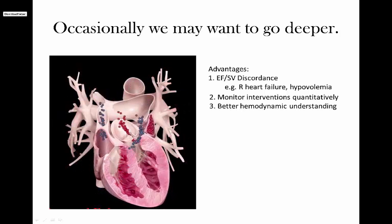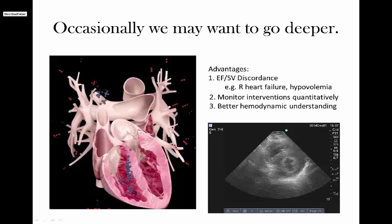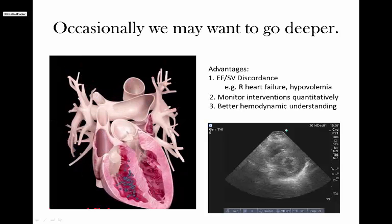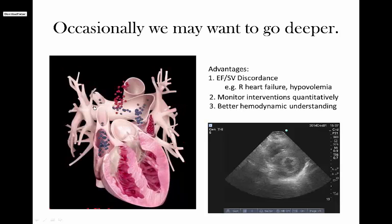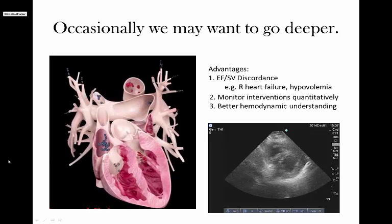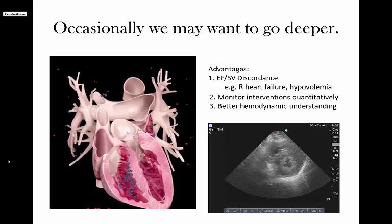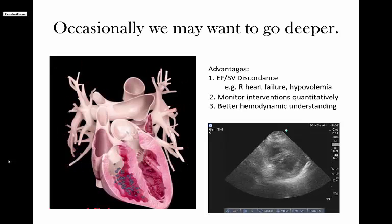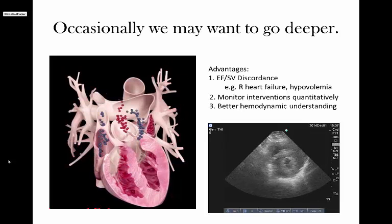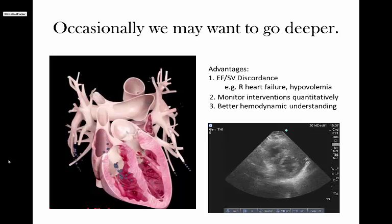More simply, hypovolemic shock is a great example where the EF might be reassuring, such as being 80% or 90% even in some examples, such as the one shown here at the bottom of the screen, where you can see the ventricle is ejecting nearly all the blood. But we know that that stroke volume is actually not terribly compatible with life. Sometimes having a quantitative measure can help resolve these more subtle circumstances, as we'll see at the end of this screencast.